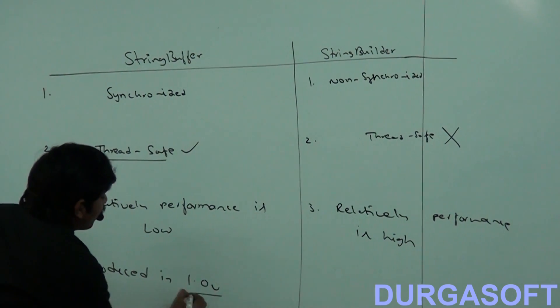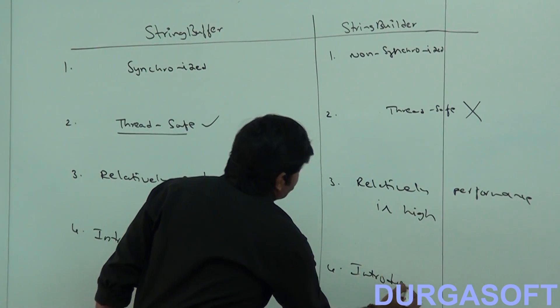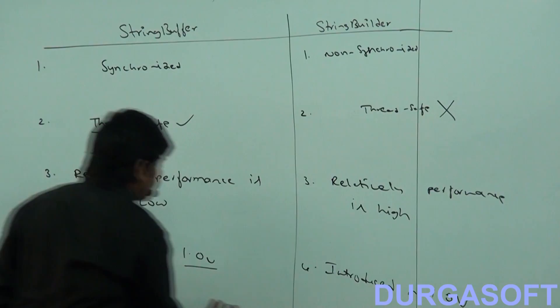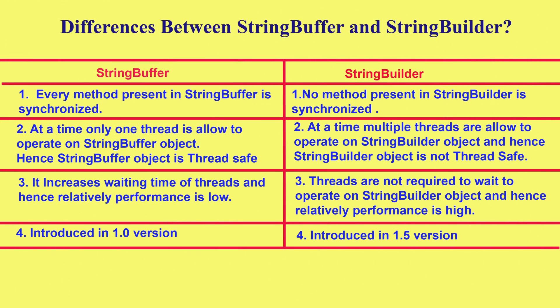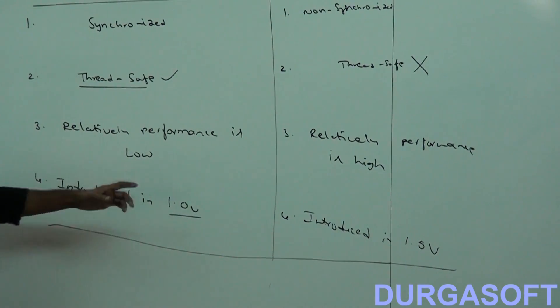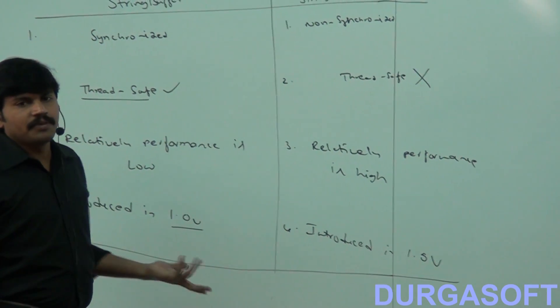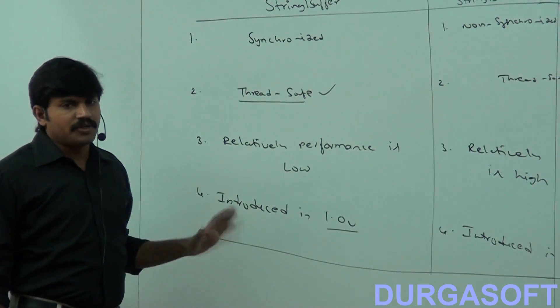Fourth point: StringBuffer was introduced in Java version 1.0 — in the very first version of Java. StringBuilder was introduced in version 1.5 — it is the new concept that came in the 1.5 version. The key difference is synchronized versus non-synchronized methods. Beyond that, there is no much difference.